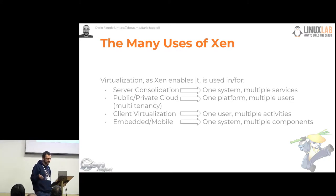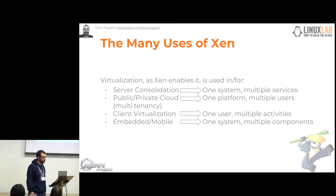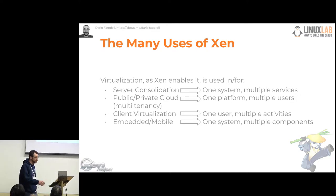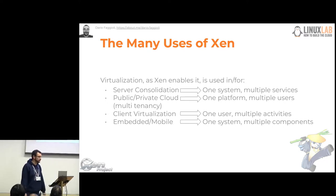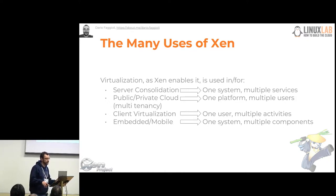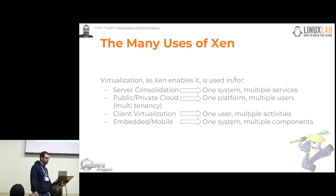The scenarios we'll be seeing are: server consolidation — the typical traditional historical use case for virtualization where you have one piece of hardware and you want to run multiple independent services on it; and public and private cloud, where you have one platform — one piece of physical hardware or more — and you want to have multiple users or customers running on top of it.